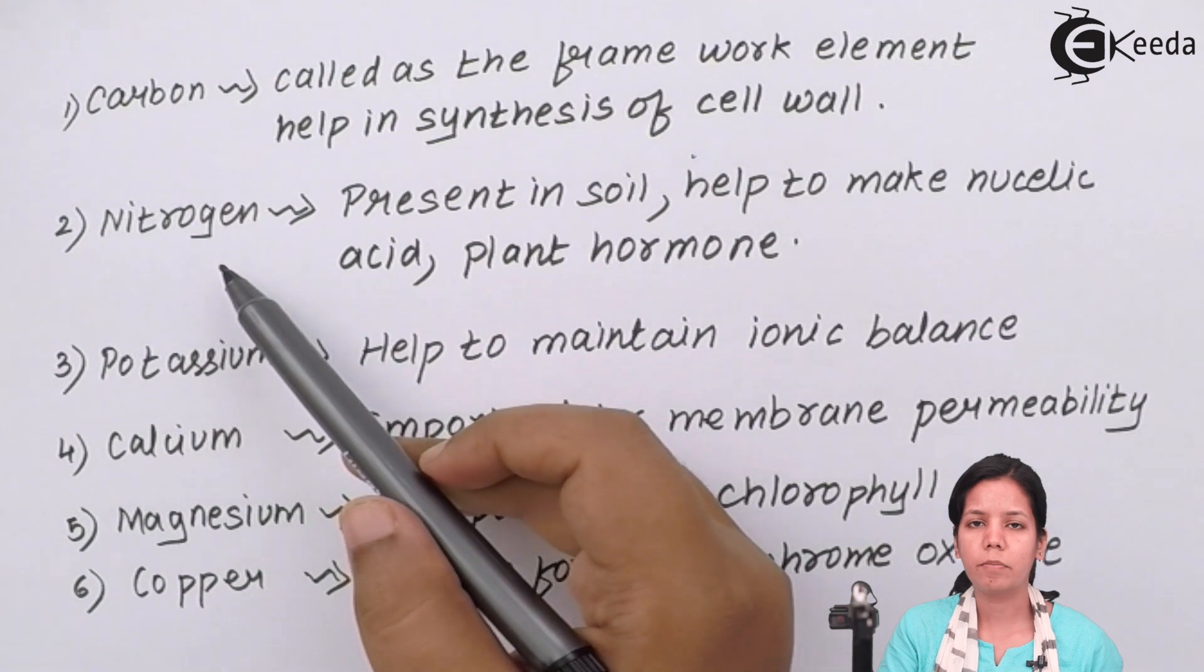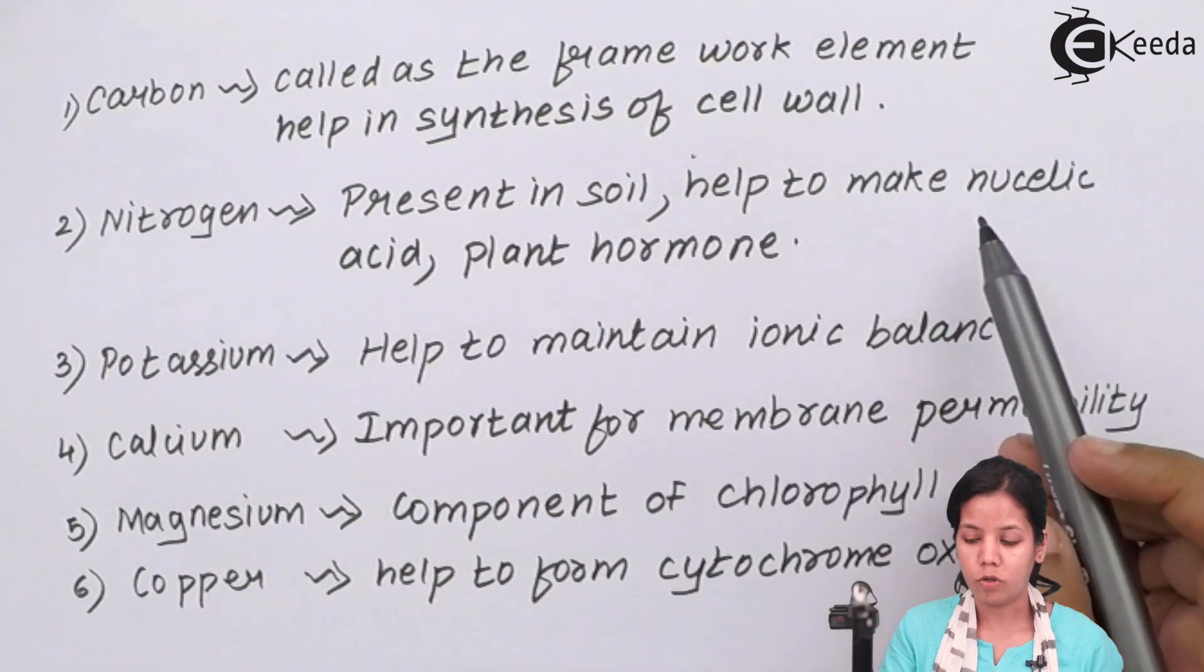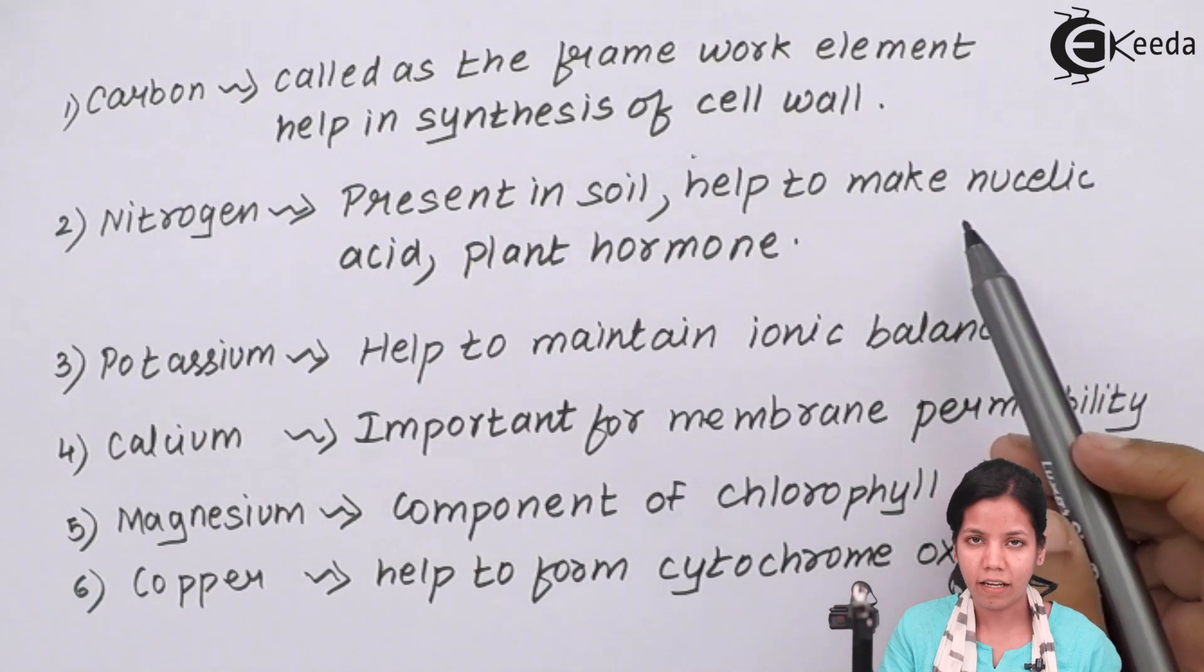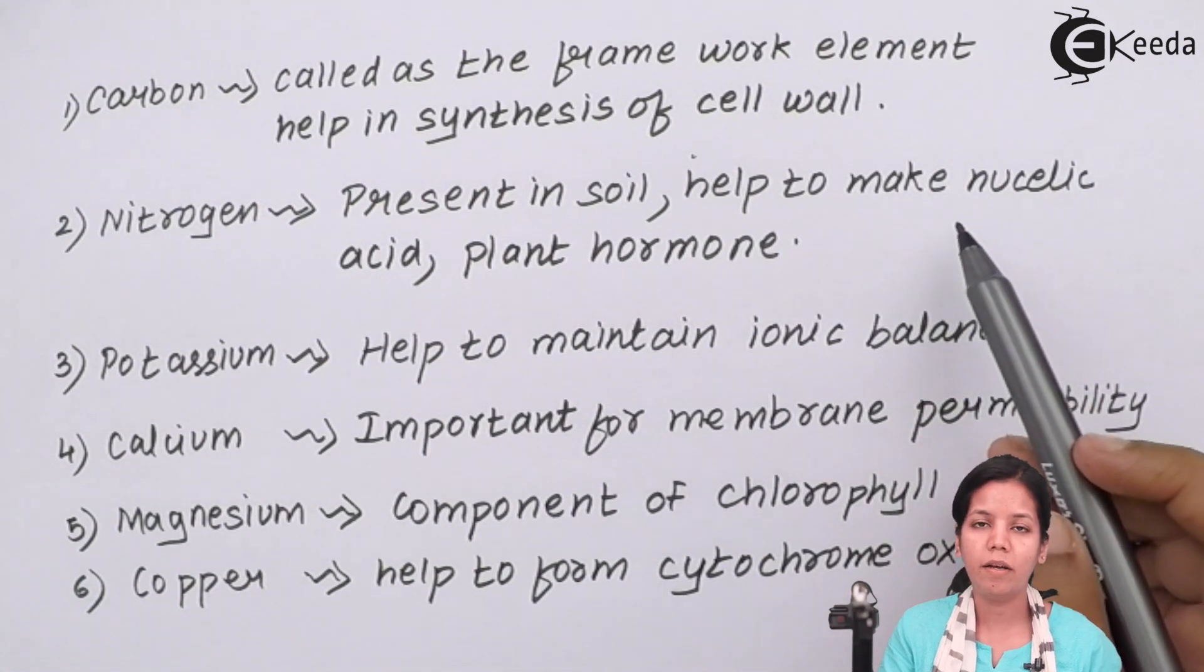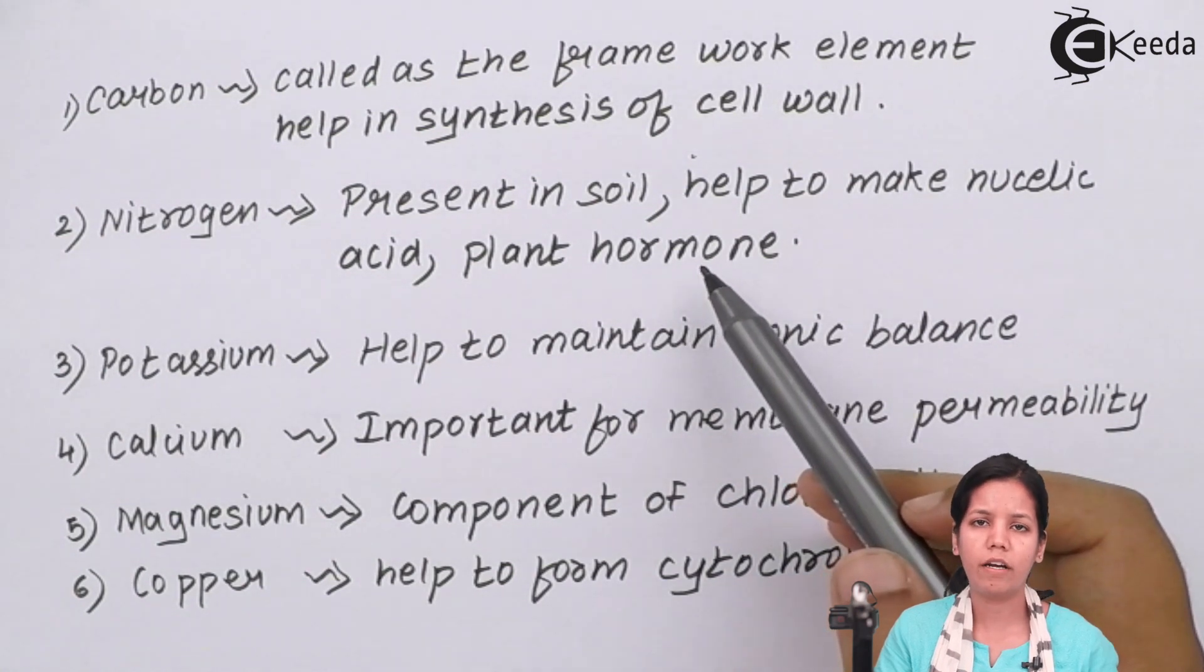Nitrogen. All legumes plants require nitrogen for their growth. Apart from that, nitrogen is used to make DNA or nucleic acid inside plant cell. Plant hormones also are dependent on nitrogen synthesis or nitrogen production.